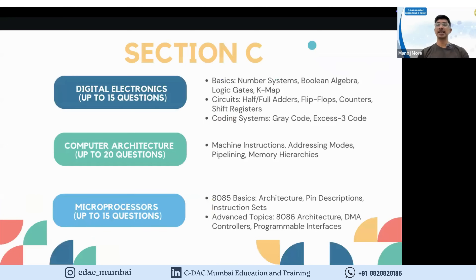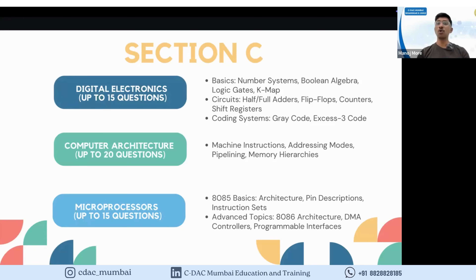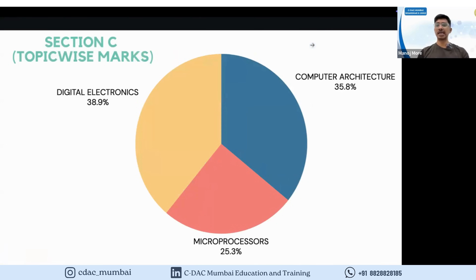Section C is specifically for VLSI and Embedded admissions. It covers digital electronics — number systems, Boolean algebra, logic gates, and K-maps — computer architecture, and microprocessors. The first topic has some mathematical calculations, but the rest is largely theoretical. Each of the three subsections contributes roughly equally with about 15 to 16 questions each, so you must study all three together to score well.